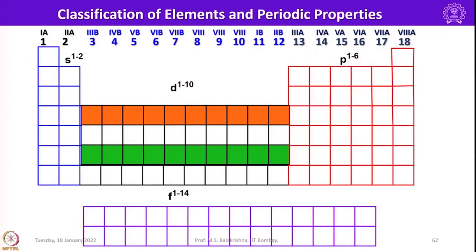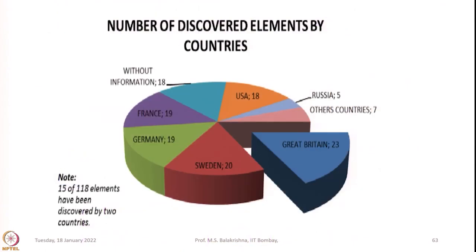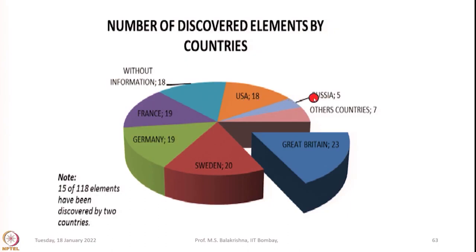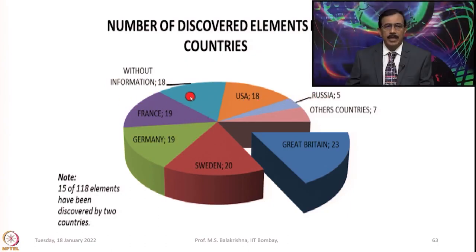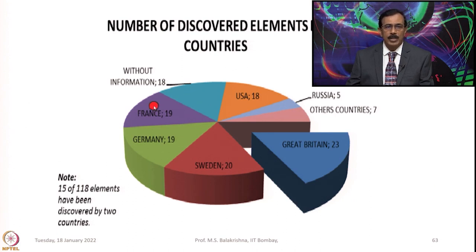Our attention will be focused on the 3d, 4d, and 5d series in the next lectures. If you are curious about the number of countries that contributed to the discovery of elements — the US contributed 18, Russia about 5, and 18 elements have no specific attribution, meaning ancient people knew about them and you cannot tag them to any country. France discovered 19, Germany 19, Sweden 20, and Great Britain 23. In total, 15 out of 118 elements have been discovered by just two countries.